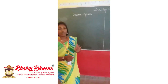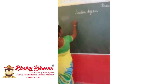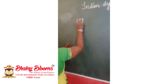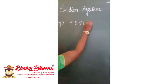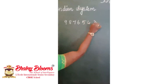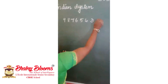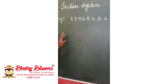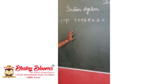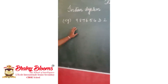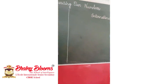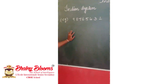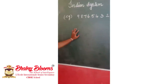Before going into the topic, let us see with a small example. Now we have taken an example of a number. We are going to see how to place commas in the Indian system and how to place commas in the international system of numeration. First we will see how to place commas in the Indian system of numeration.